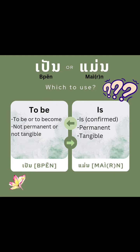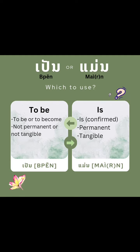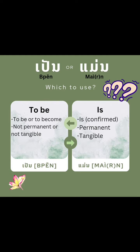Man, on the other hand, can only be used in situations where something is confirmed, something permanent, and something tangible. I have a few examples in the following of when each is appropriate to be used.